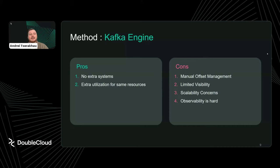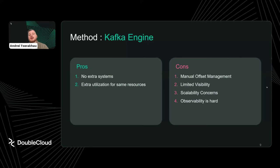Another con is handling corrupt data. If data in Kafka is corrupted by some reason, it's really hard to handle in ClickHouse. There is a concept of a dead-letter queue — a special landing location for data that can't be parsed — but ClickHouse has no built-in capability to postpone corrupted data. You have to do this manually: manually reading the offset in Kafka and moving that offset to skip past the corrupted data. These are the main pros and cons of the Kafka Engine method.